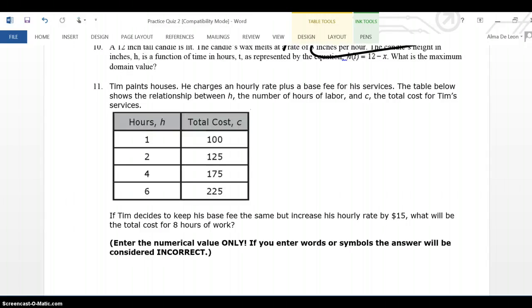Tim paints houses. He charges an hourly rate plus a base fee for his services. The table below shows the relationship between h, the number of hours of labor, and c, the total cost of Tim's services.